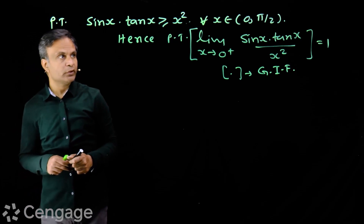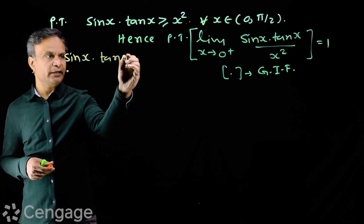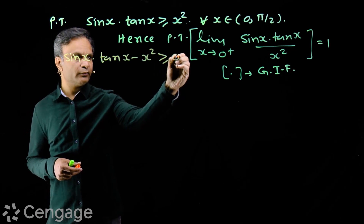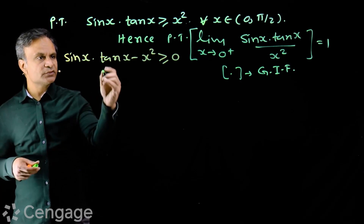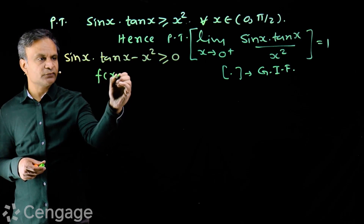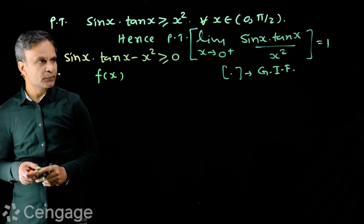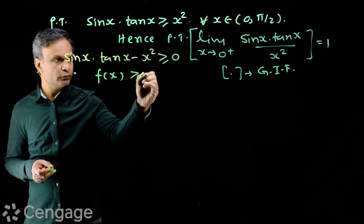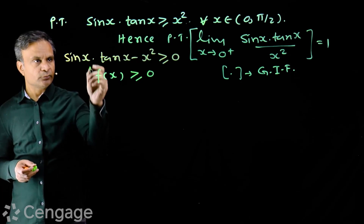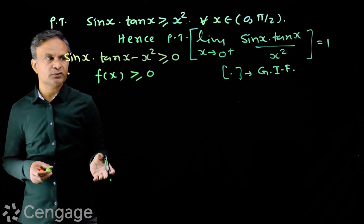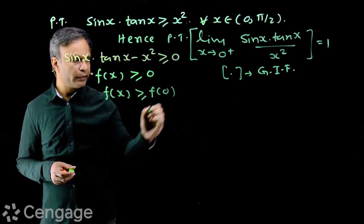To prove sin x · tan x ≥ x², we need to prove that sin x · tan x minus x² is greater than or equal to zero. Suppose we define f(x) = sin x · tan x minus x². We have to prove f(x) ≥ 0. Now f(0) = 0, so we need to prove that f(x) ≥ f(0).